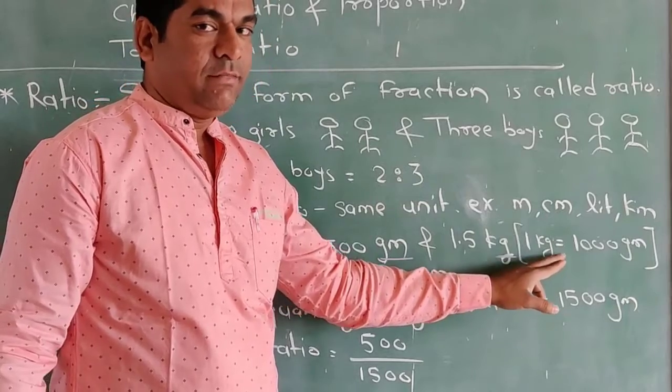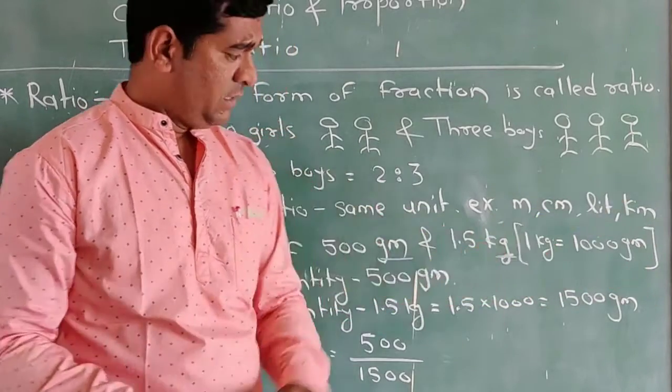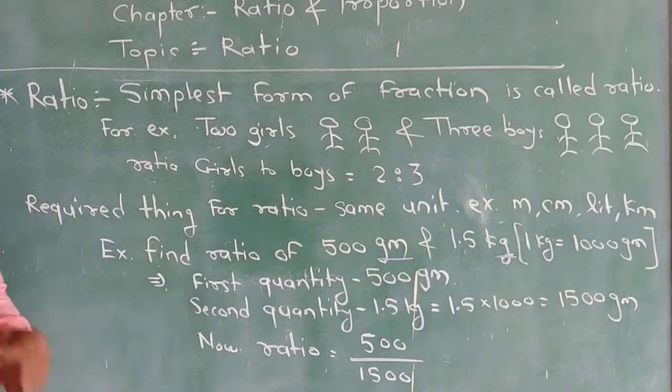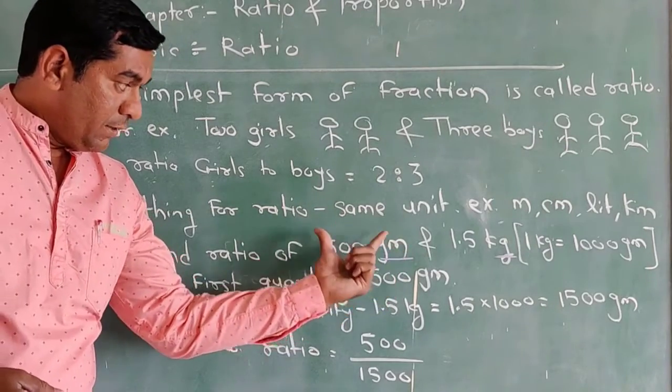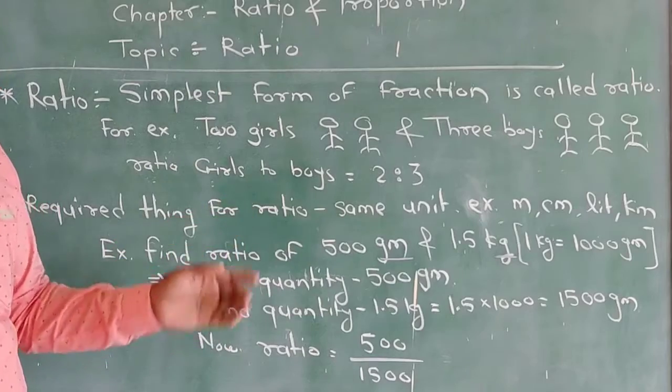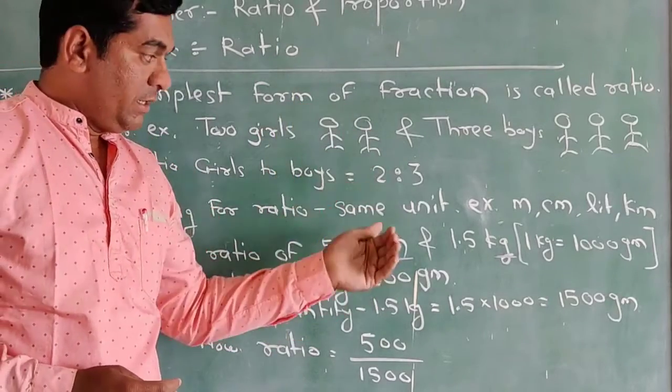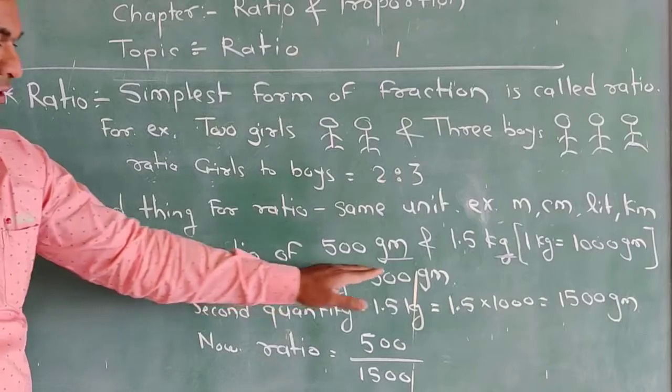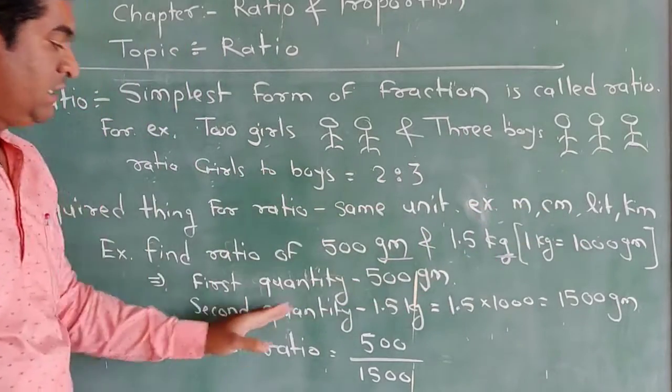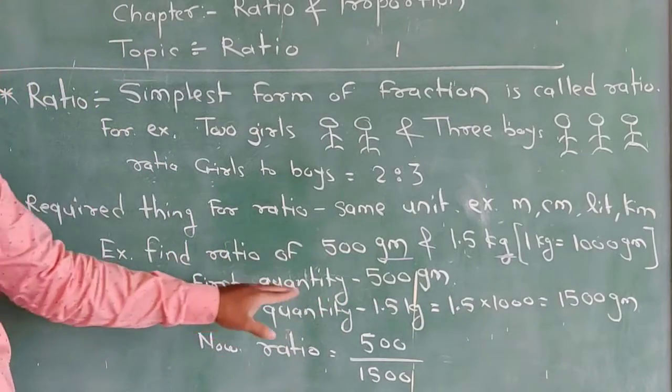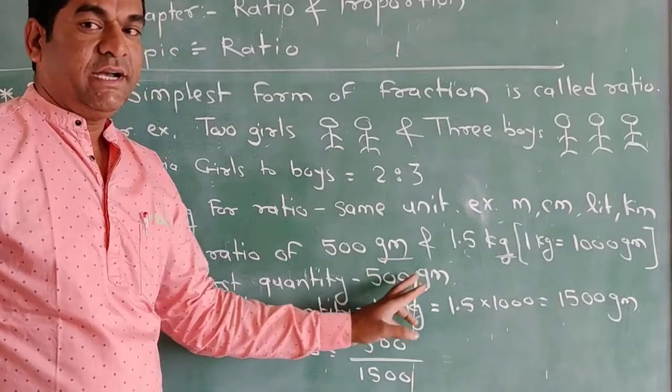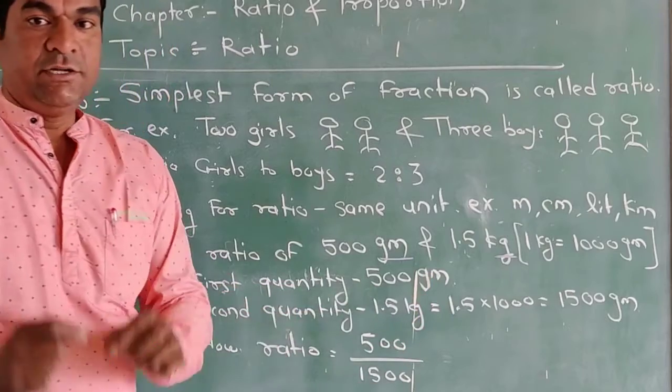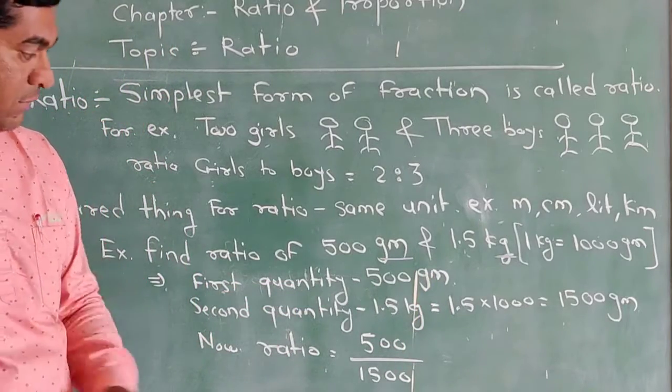Right now, first quantity and second quantity - what is the first quantity and second quantity? First quantity is 500 grams, second quantity is 1.5 kg. As we can see, grams and kg - the units are not the same. So we want to make the units the same. We convert kg into grams.